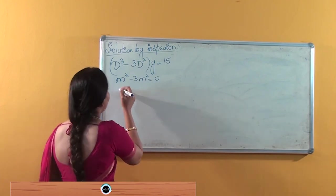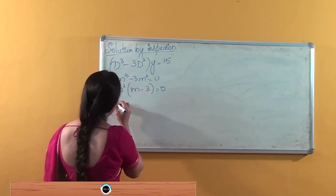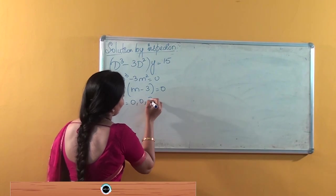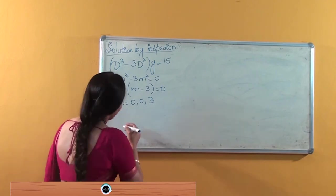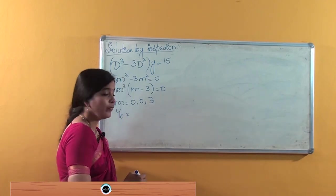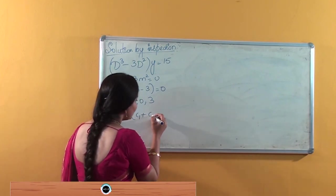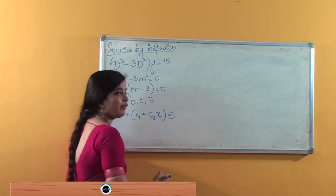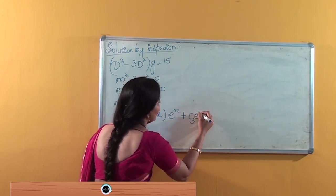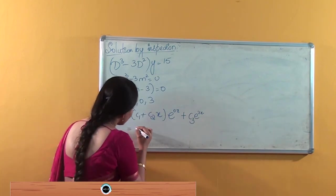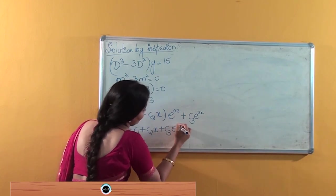For the complementary solution, write the auxiliary equation: m³ - 3m² = 0. Factoring gives m²(m - 3) = 0, so m = 0, 0, 3. Since 0 is repeated twice, the complementary solution is: yc = (c1 + c2·x)·e^(0·x) + c3·e^(3x), which simplifies to yc = c1 + c2·x + c3·e^(3x).